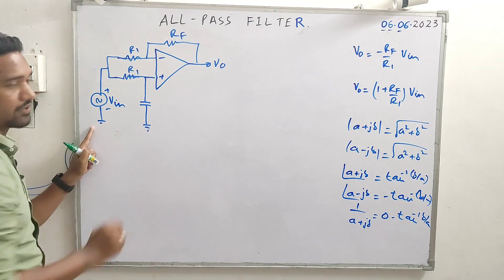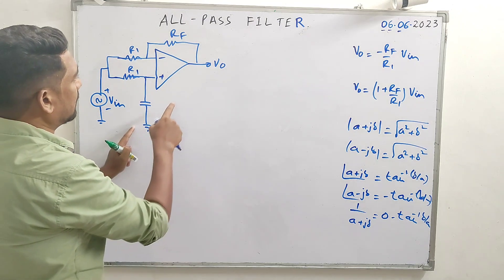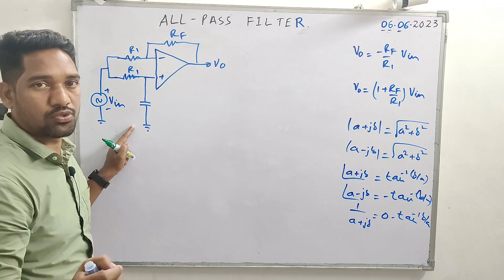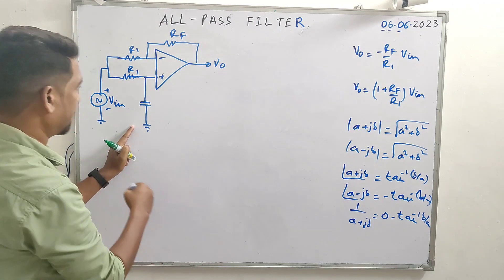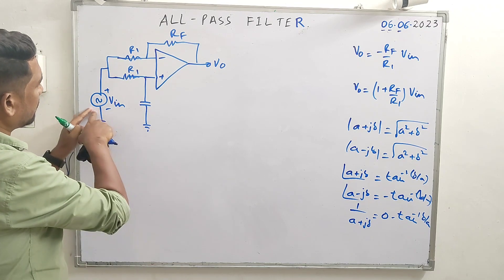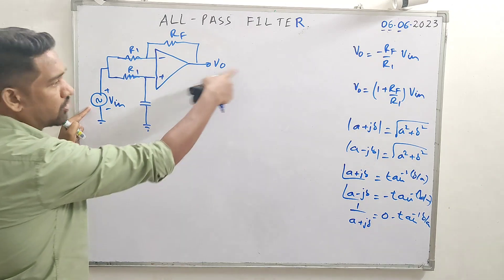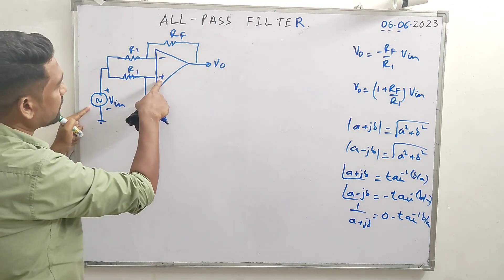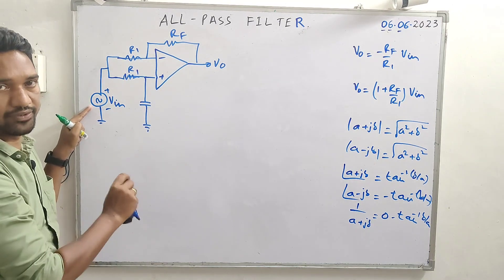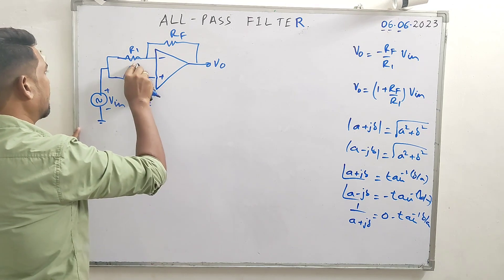To analyze this circuit we use the superposition theorem. By the superposition principle, first we apply input only to the inverting terminal and calculate V_naught. Then we apply input only to the non-inverting terminal and calculate V_naught. The algebraic sum of these two gives the total V_naught.